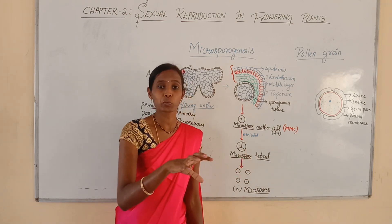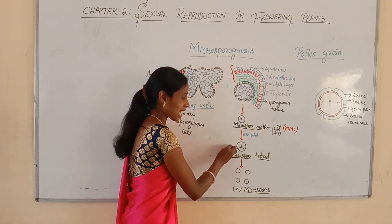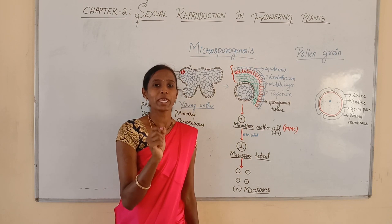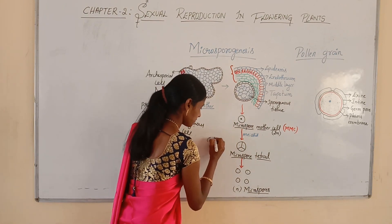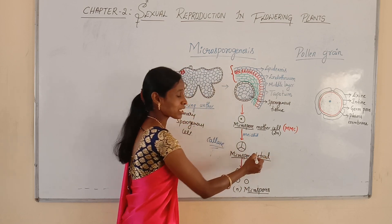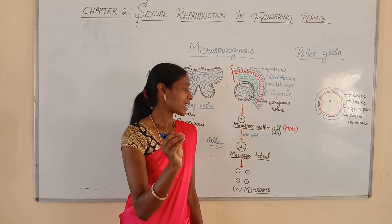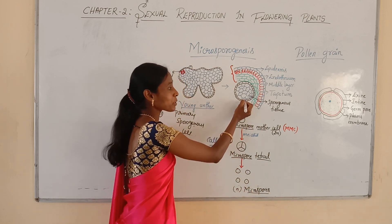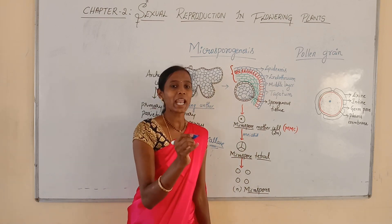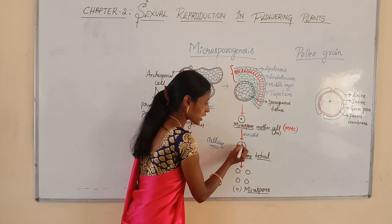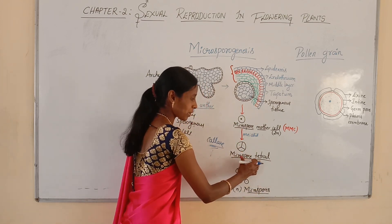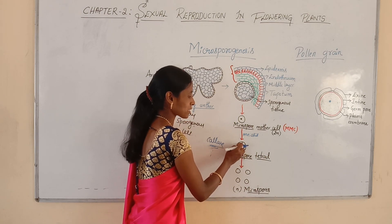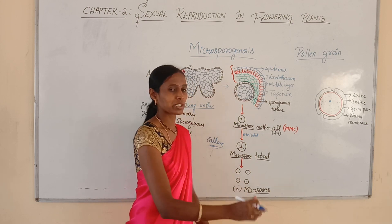How will all four microspores get separated? The tapetum produces many enzymes. One important enzyme is callase. The microspores are attached together by callose, and in order to separate them, the callase enzyme produced by the tapetum helps in the dissolution of the callose present between the microspores, so that all four microspores get separated.